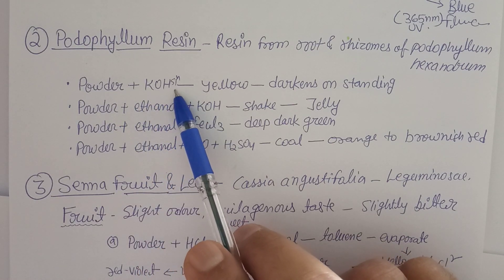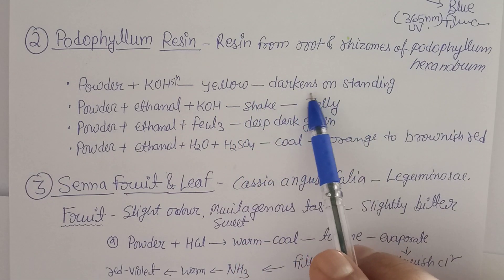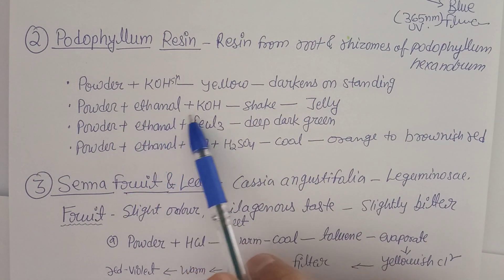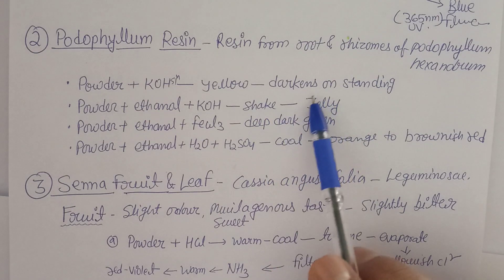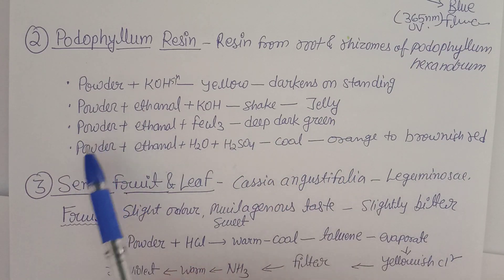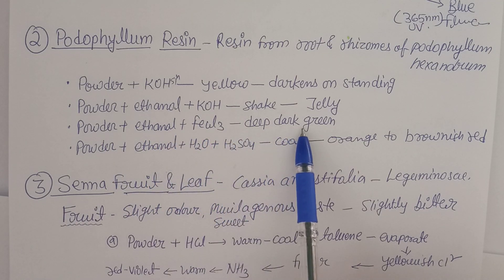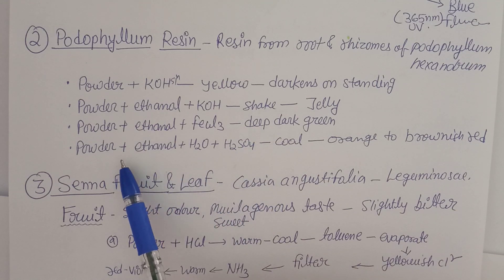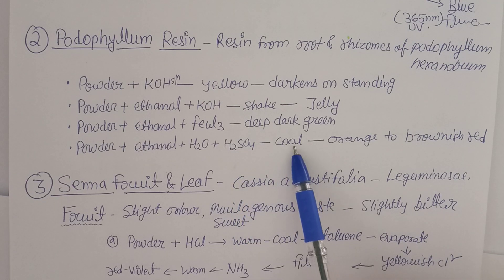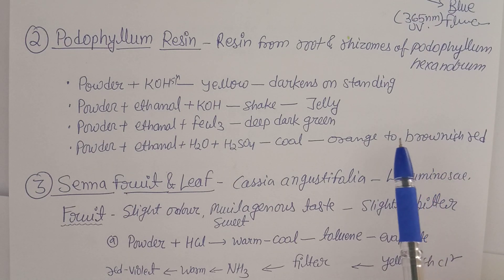If left to stand for a few minutes, a dark color appears. Second test: add ethanol and potassium hydroxide to the powder and shake — a stiff jelly formation will be observed. Third test: add ethanol and ferric chloride (FeCl₃) to the powder — a deep dark green color will be observed. Fourth test: add ethanol, then water and H₂SO₄, cool it — an orange to brownish-red color will be observed.